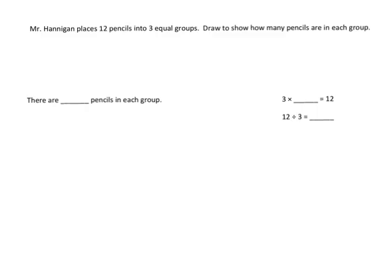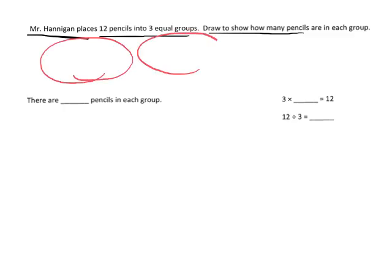Now in this problem we have Mr. Hannigan again, and he places his 12 pencils into three equal groups. Draw to show how many pencils are in each group. So we know we need three equal groups, so I'm going to start by drawing three circles. There's my three equal groups.